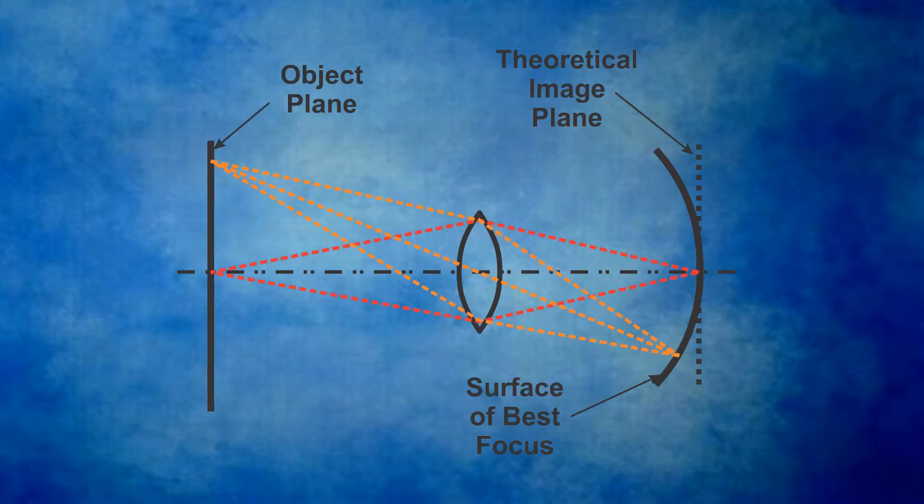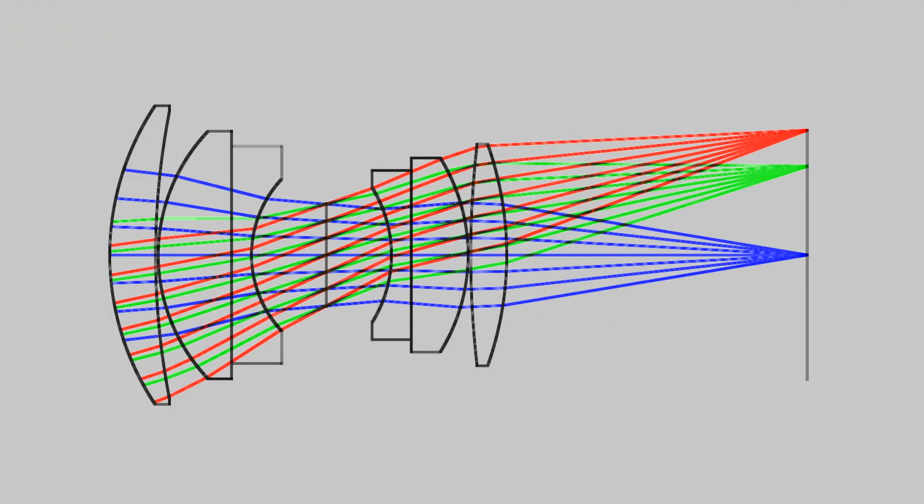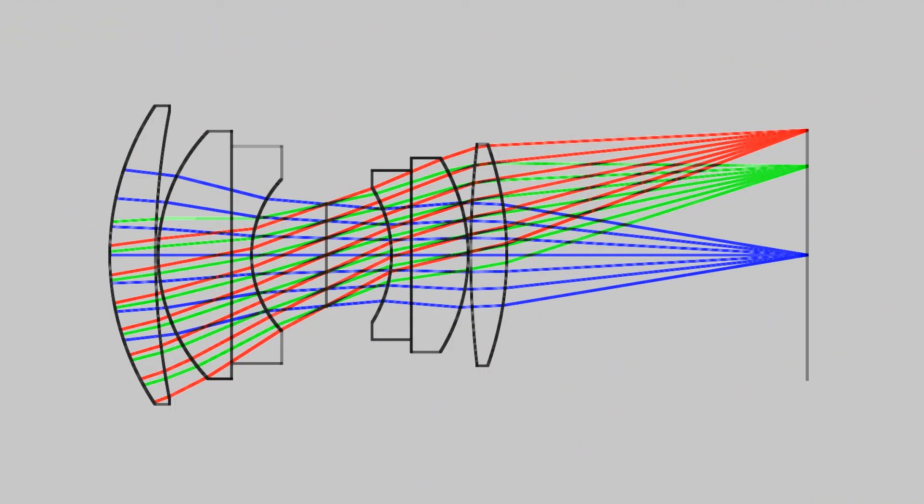The ideal lens would focus a flat scene onto a flat image. However, many lenses achieve sharpest focus on a curved scene or curved image. This is called field curvature. The main reason a lens designer uses multiple glass elements in a lens design is to minimize aberrations over the working range of a lens.